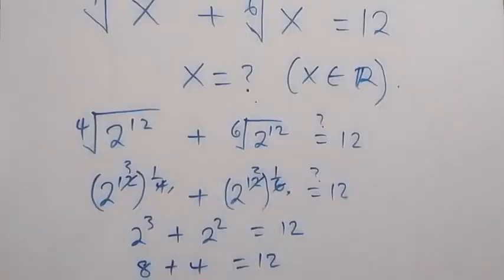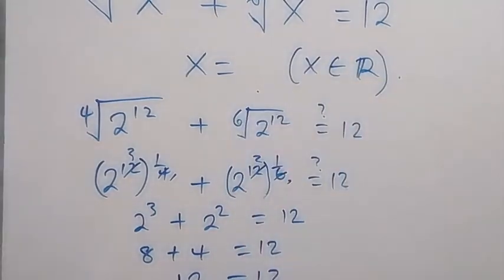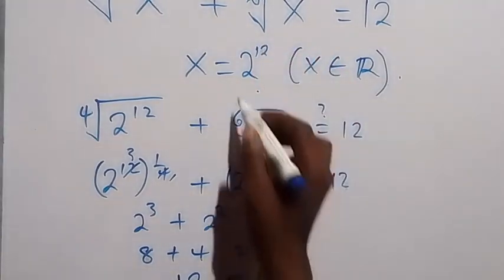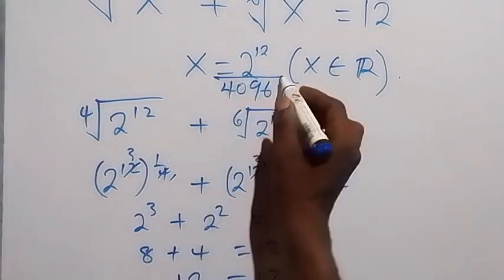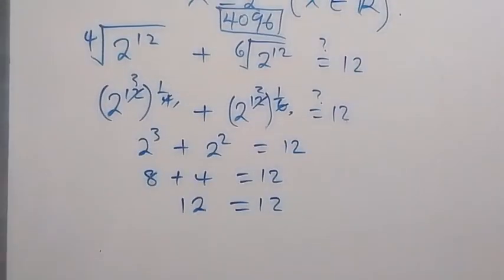We can conclude that x equals 2 to the power of 12, which we can also write as 4096. That is the solution to the problem. Thank you for watching — don't forget to subscribe for more exciting videos, give it a thumbs up, and leave a comment. See you in the next class, bye for now.